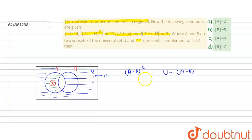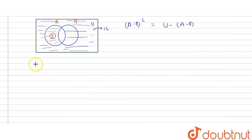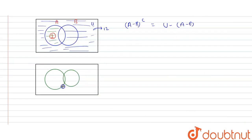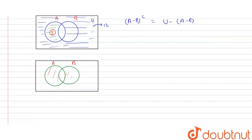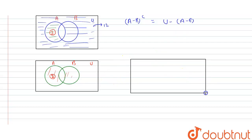Now let's draw another Venn diagram to represent A union B, with set A and set B. A union B covers this whole combined region. The value of A union B is given as 9, the universal set is 14, and the only-A region (A minus B) is 2. We now need another diagram for the symmetric difference to find the final answer.